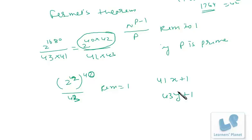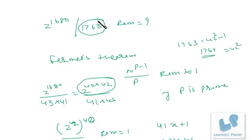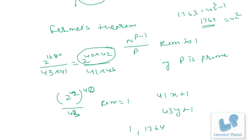That means finally the remainder is 1, because the number should be in 41x plus 1 format or 43y plus 1 format, so that's 1. And then 1764, but 1764 will be greater than 1763, so remainder should not be greater than the divisor.